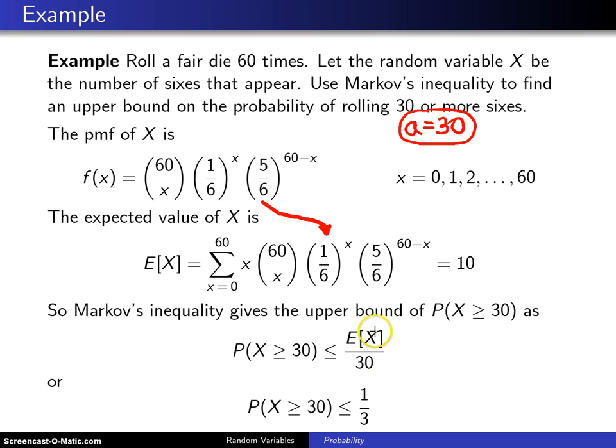Well, if the expected value of X is 10, then you have 10 thirtieths, which is one third. And so the probability of getting 30 or more sixes is less than or equal to one third.